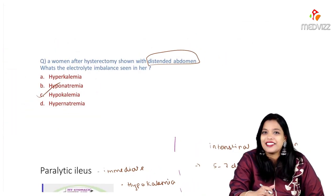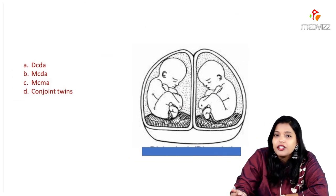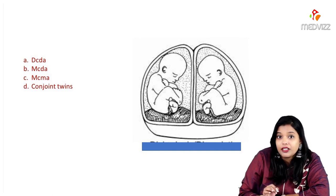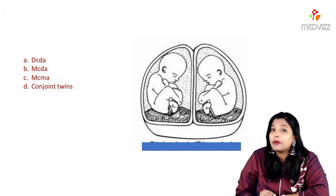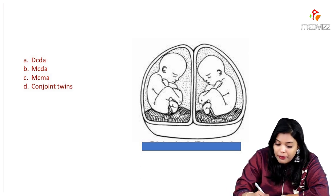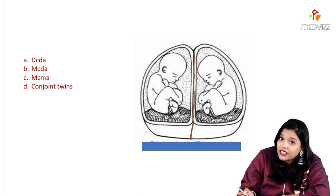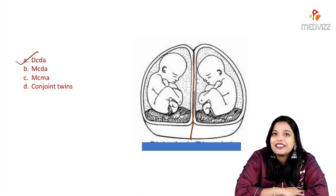Next was an image-based question. The image shows a single-looking placenta and two amniotic sacs. At one glance you might answer monochorionic diamniotic, but on close observation there is an intervening membrane between two amniotic sacs — that is actually two separate placental layers. So there are two separate amniotic sacs with a fused-looking placenta.